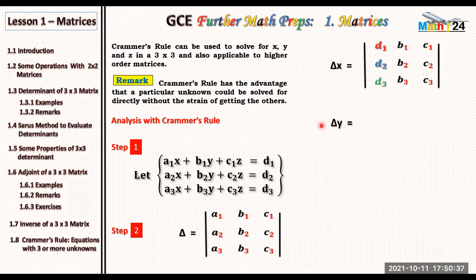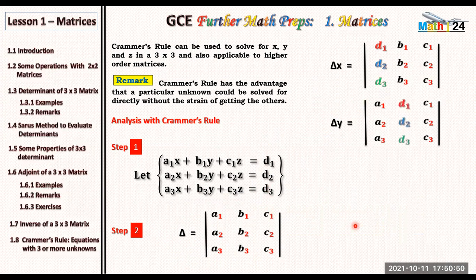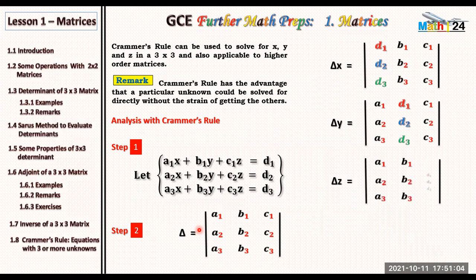We equally look for delta y — the determinant of y. We are now going to replace the second column by the constants d1, d2, and d3. For delta z, you can guess which column we replace — yes, exactly: for delta z we replace the last column by d1, d2, and d3.